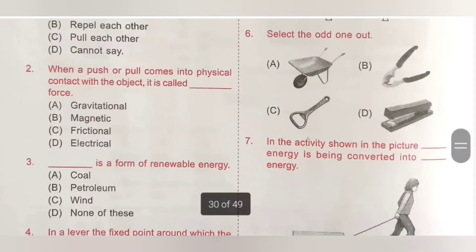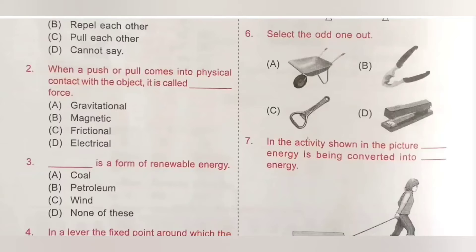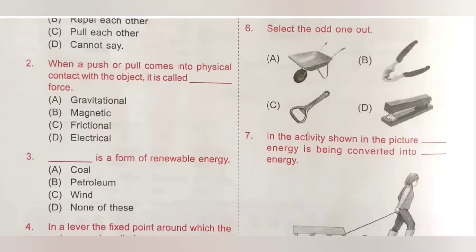Question 6: Select the odd one out. Among the given items, the stapler is the odd one out because it is a third class lever — that is, the effort is located between the fulcrum and the load. All the others are second class levers, as the load is located between the fulcrum and effort. Option D is the correct answer.